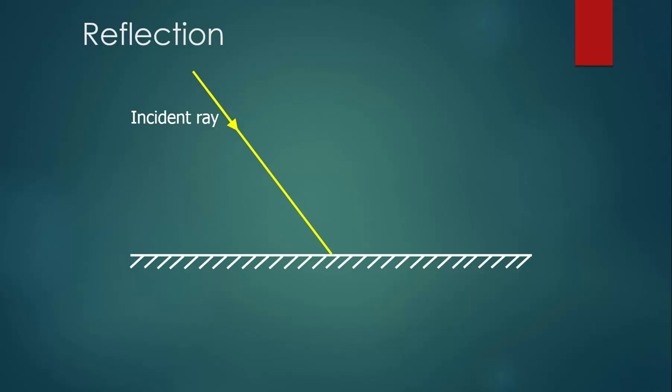We want to be able to describe the direction of this ray, and down to the right just doesn't cut it. Just like we did with vectors, we describe the direction by describing an angle. For reasons that will become clear later on, we're not going to just measure the angle between the ray and the reflective surface. What we're actually going to do is draw a line perpendicular to the reflective surface right where the incident ray strikes it.